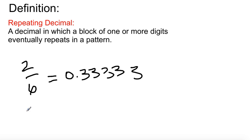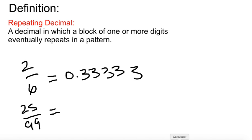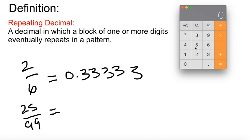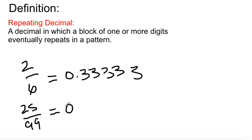Now, if we take another fraction from the textbook — let's say 25 over 99 — what's that going to give me? Let's try it in the calculator. 25 divided by 99 will give me 0.252525, and so on and so forth until the end of time.